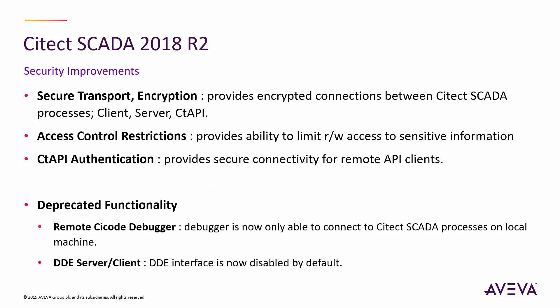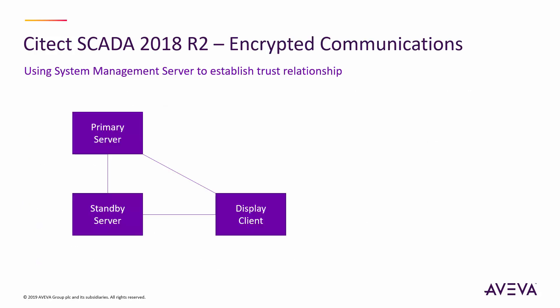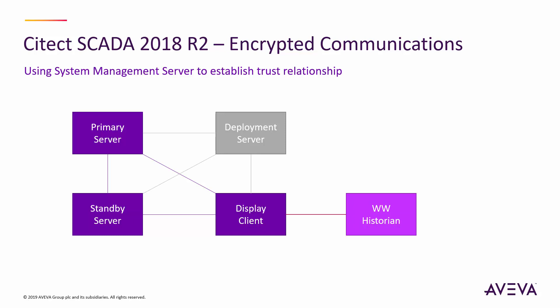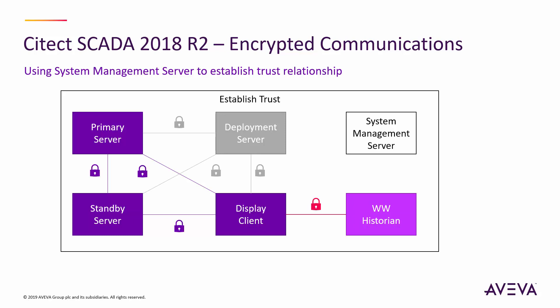There's also been a significant investment in security within the 2018 R2 release, adding support for encryption, user groups for access control, and more. In addition, some legacy functionality is now disabled by default. By way of example, a standard redundant configuration with a primary and secondary server pair, a remote client, a historian, and a deployment server can now easily be encrypted with the addition of a system management server. This facilitates the creation and deployment of certificates to establish a trust relationship between all system nodes.